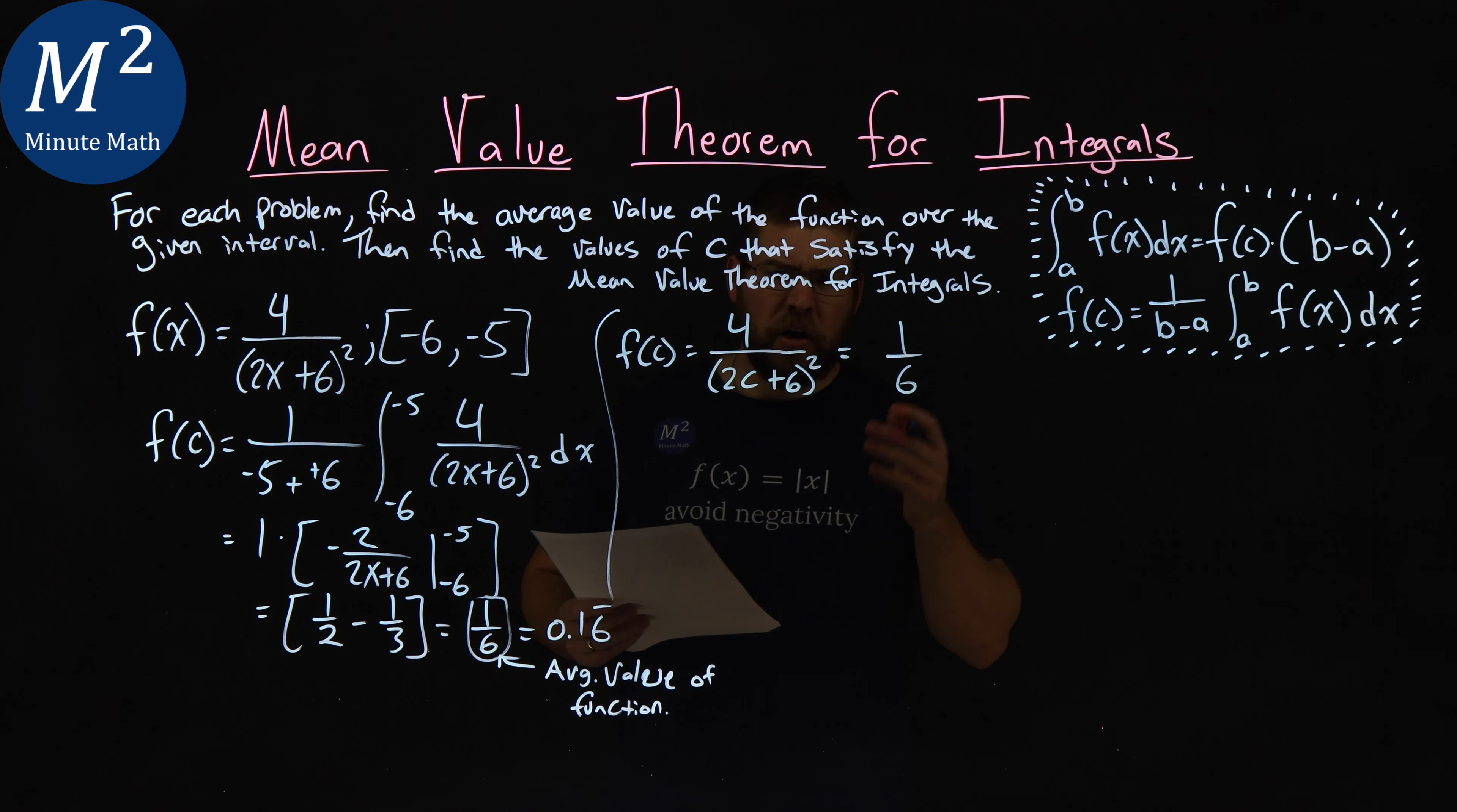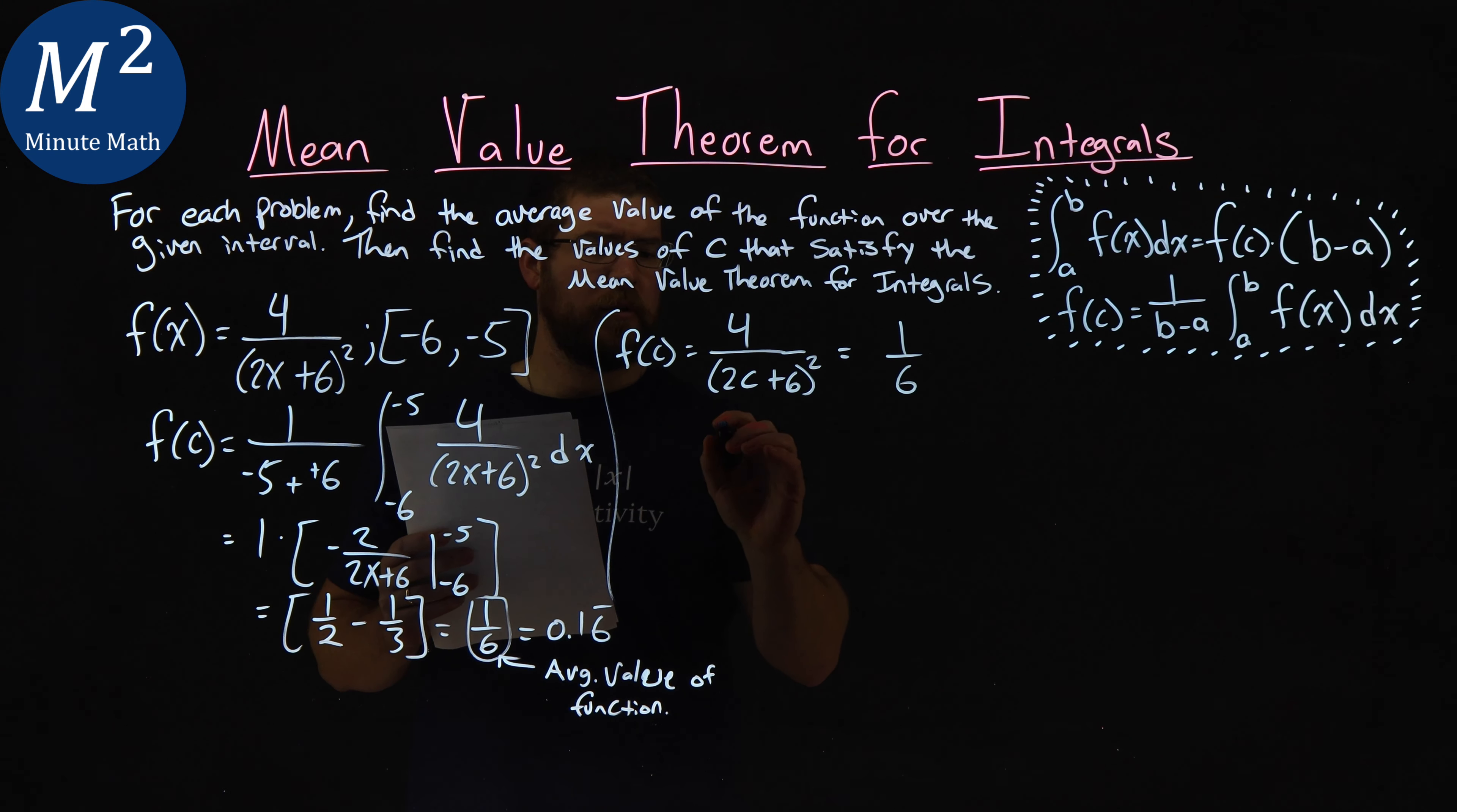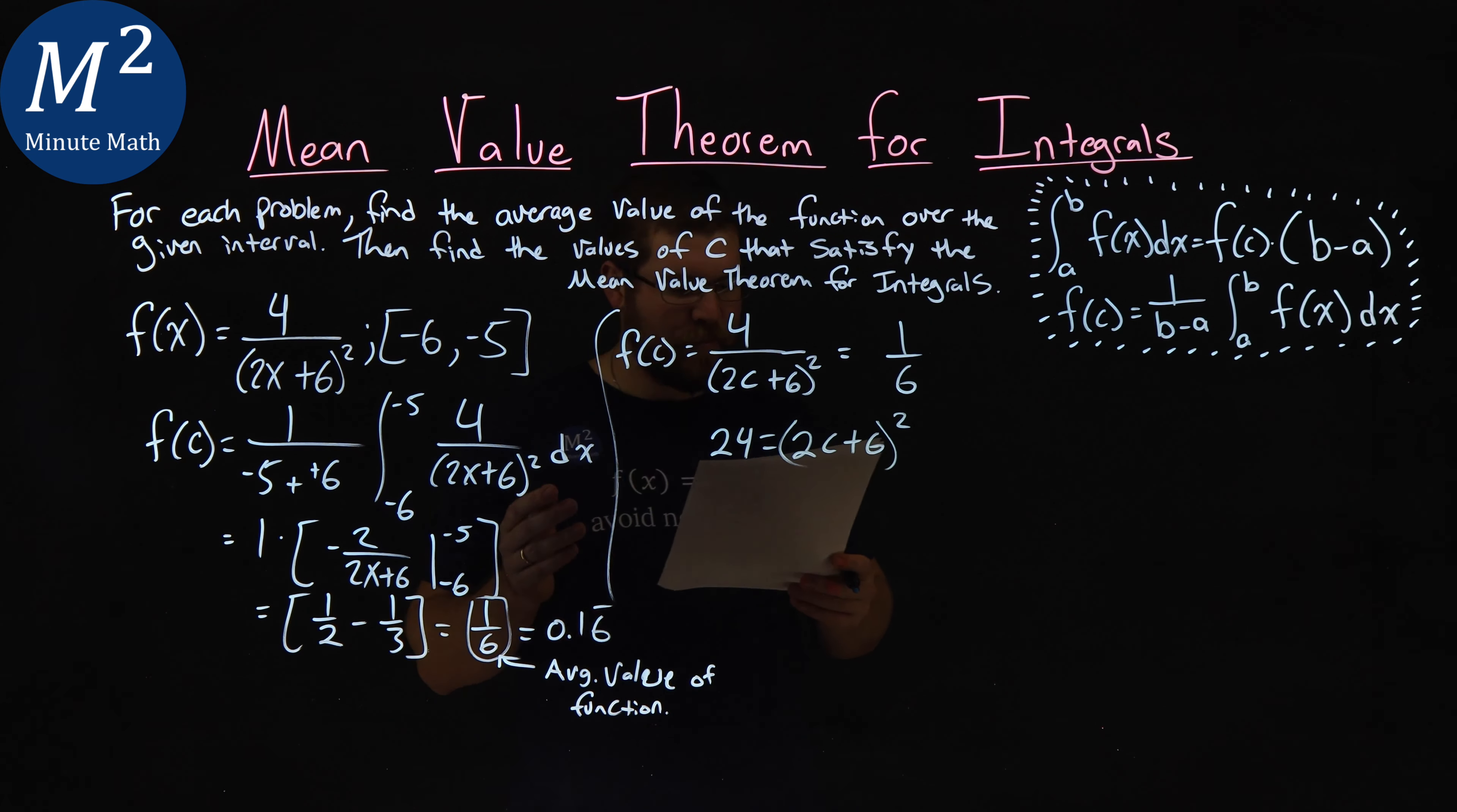Not too bad. So from here, we want to solve for c. It's just algebra. Cross multiply. 4 times 6 is a 24. Equals a 2c plus 6 here. Squared.